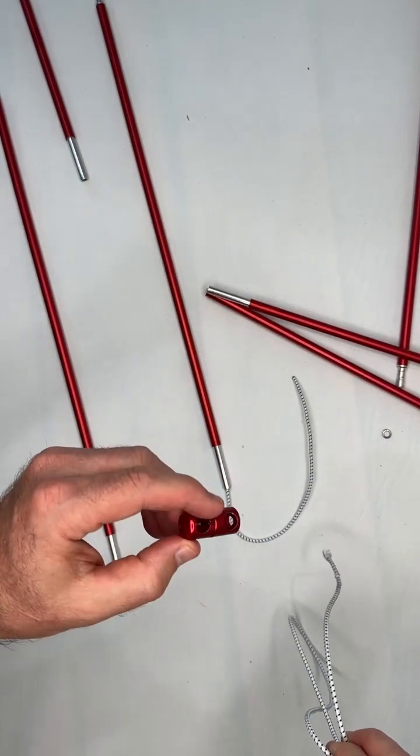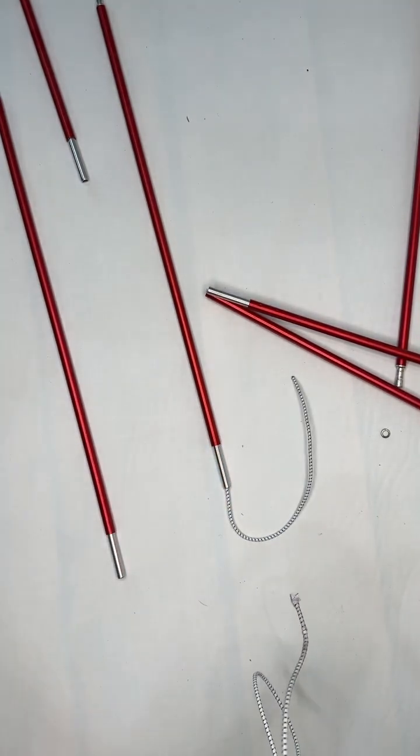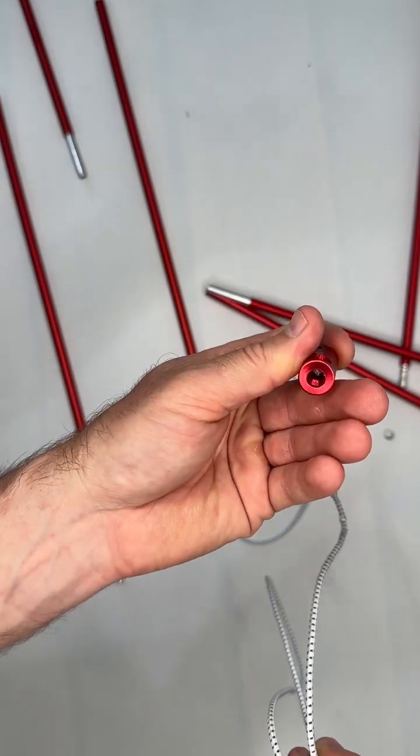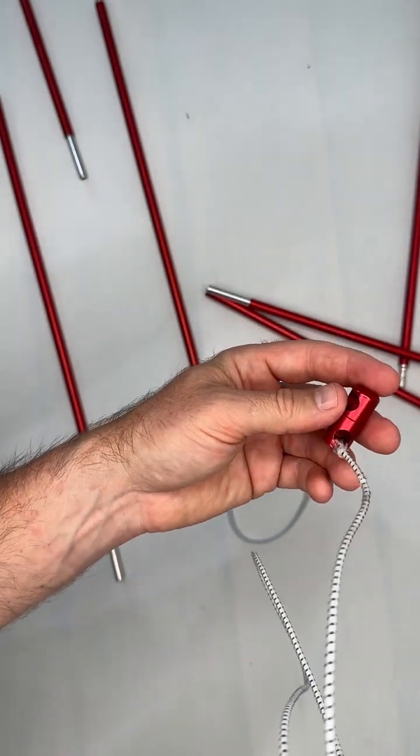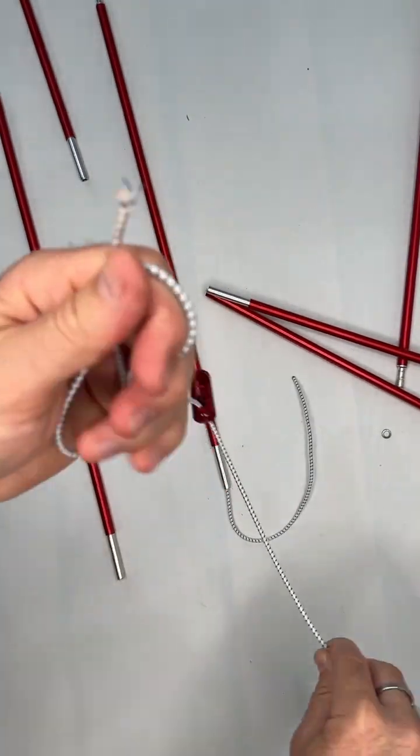Now you can see there's a top part and a bottom part. We just did the bottom part. I'm going to grab the bottom part, which has the hole on it, and put my bungee cord, or shock cord we also call it, through it.